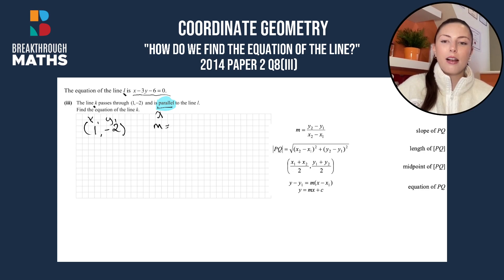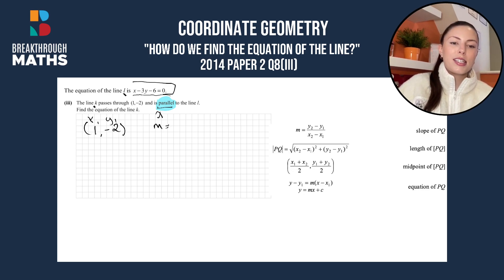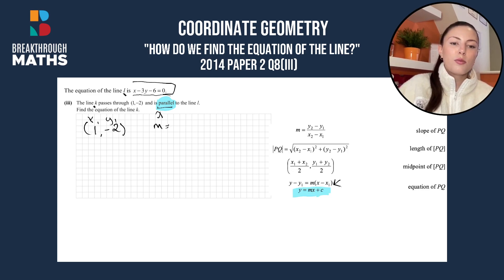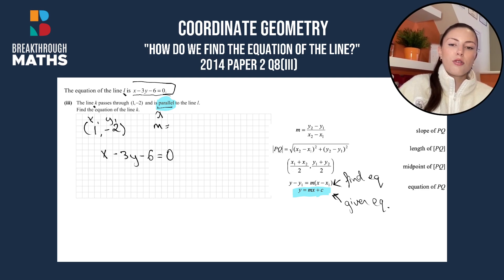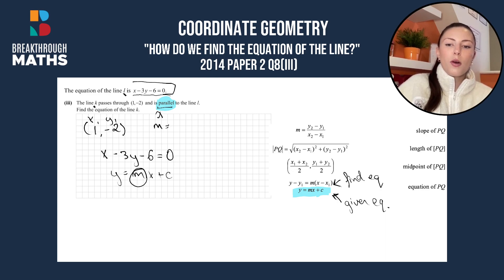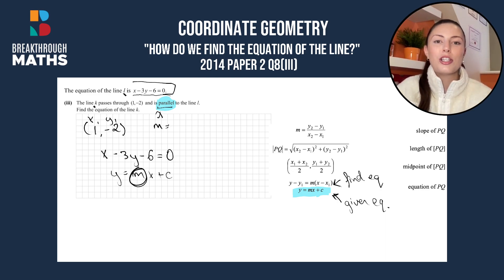We'll find the slope of line L first. We're given the equation of line L but we're not told any points on it. This is when we resort to the equation of the line formula — the second one. The first one is what we use to find the equation of the line, and the second one is what we use when we're given the equation of the line, like we are here. The equation of line L is x minus 3y minus 6 is equal to 0.